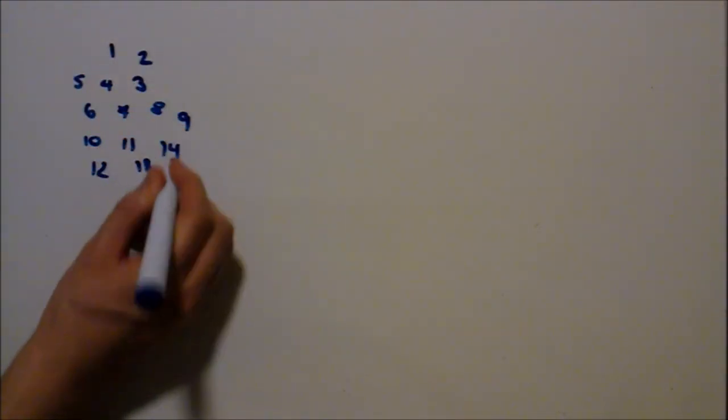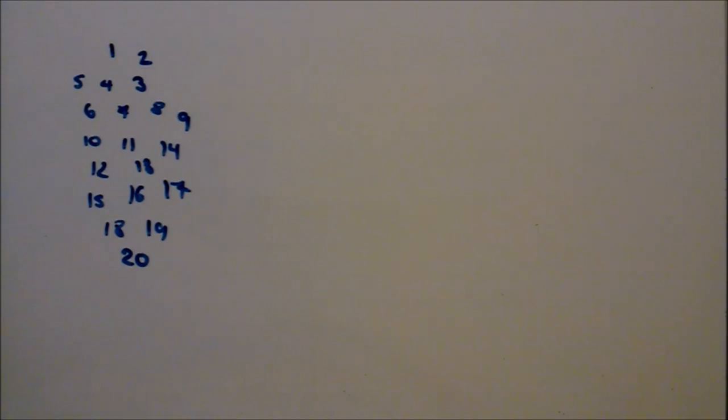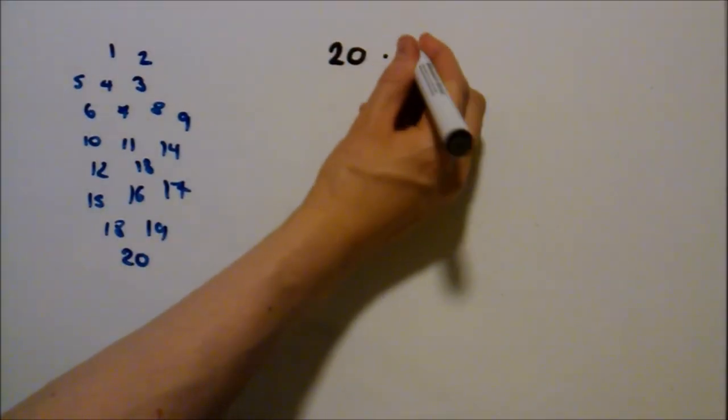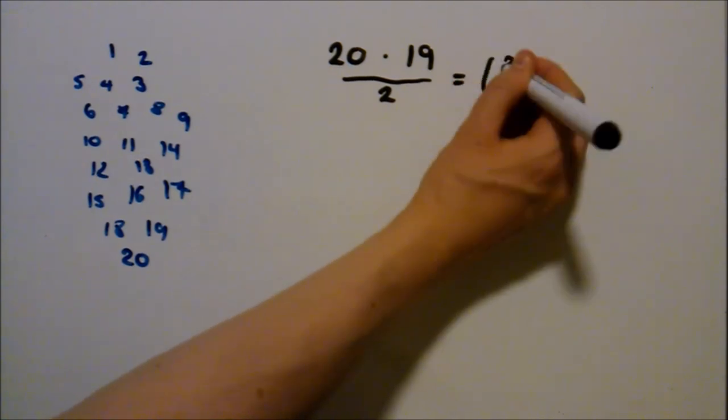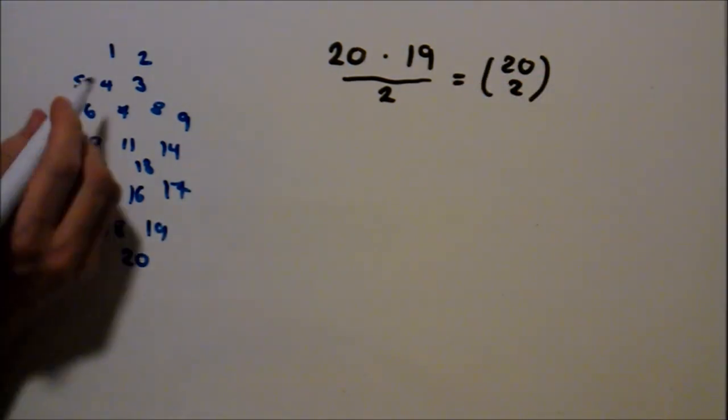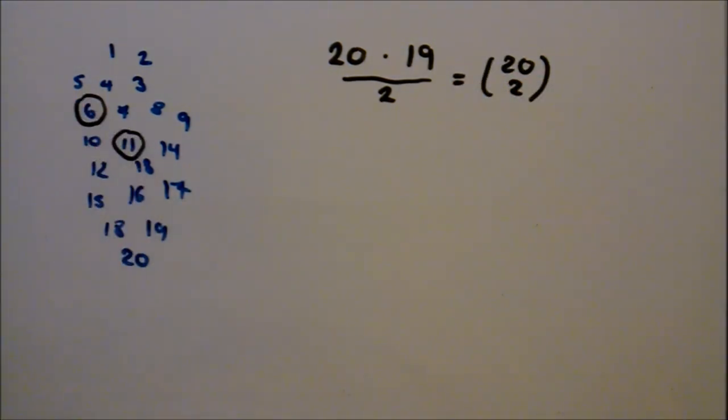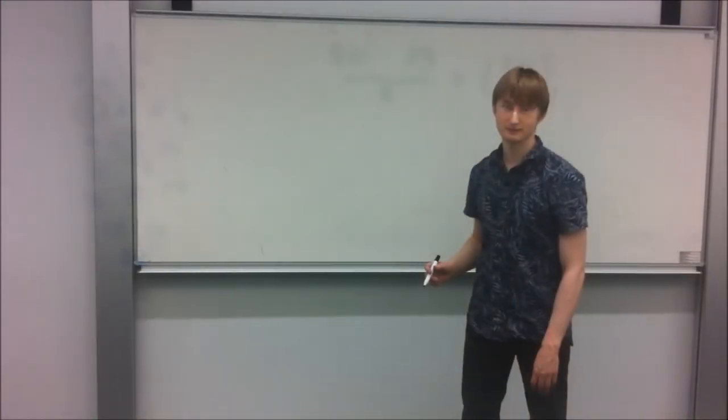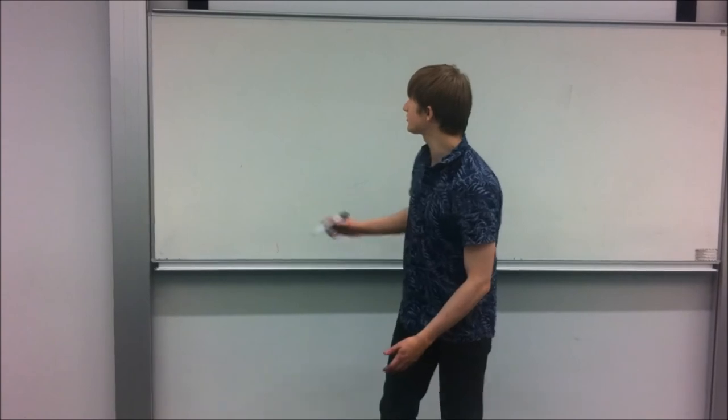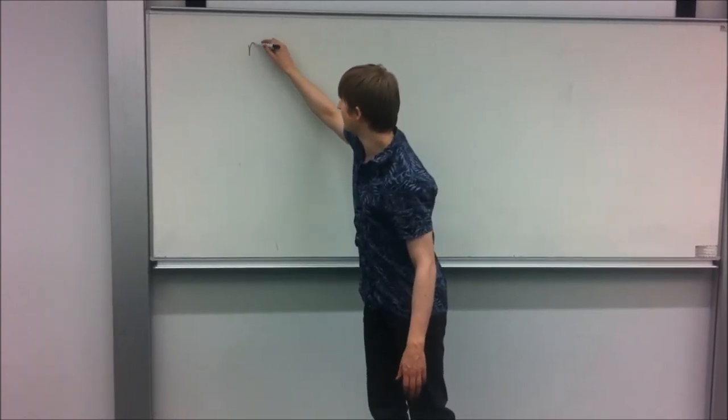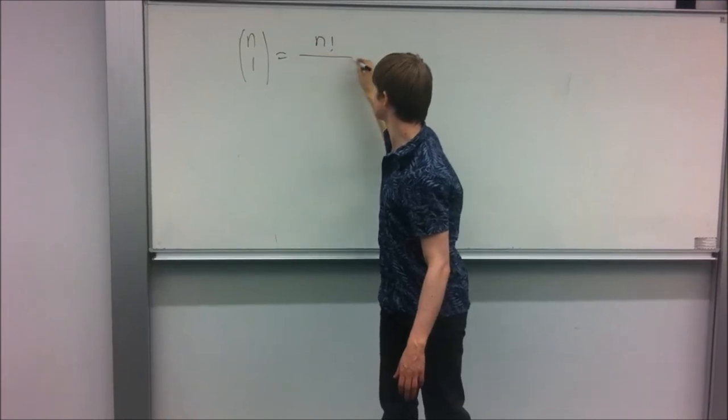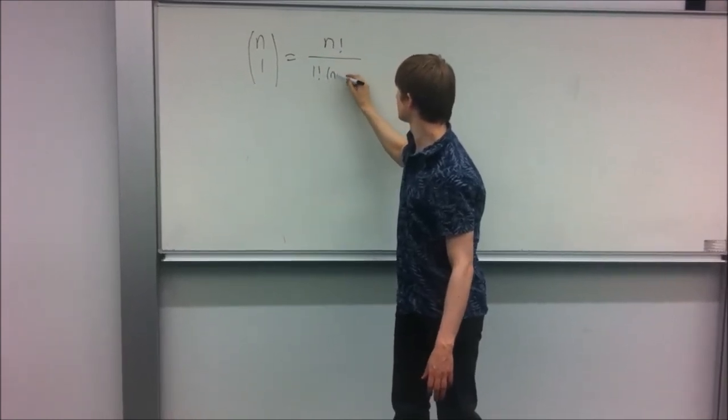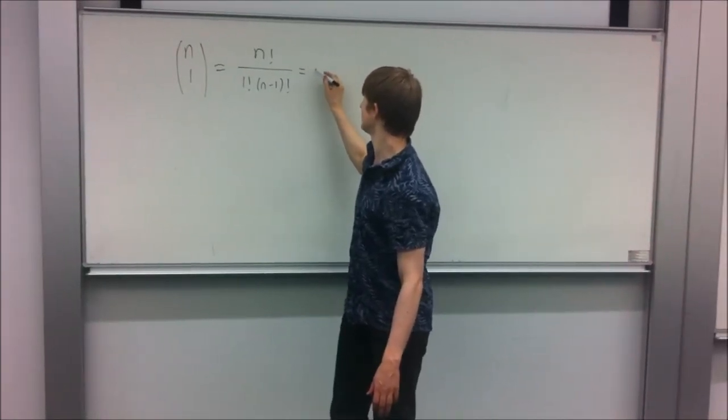This makes sense, because on your list of 20 items, you can make 20 choices for your first item and 19 for your second. However, this means that you've counted each option twice, so you have to divide by 2, because for example, if you picked item 6 first and item 11 second, that's exactly the same as picking 11 first and 6 second. Lastly, observe that for any number n, we have that n choose 1 is just equal to n.